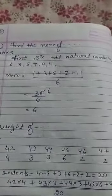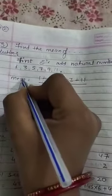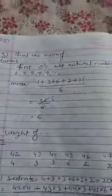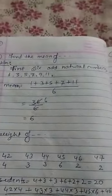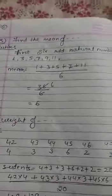So what is the mean? 1 plus 3 plus 5 plus 7 plus 9 plus 11 upon 6, that is 36 upon 6 and 6.